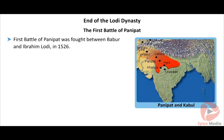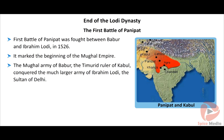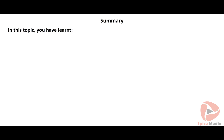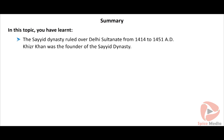Ibrahim Lodi ascended the throne in 1517 AD after his father Sikandar Lodi's death. He was a harsh ruler who disgraced his nobles and assassinated some of them. Daulat Khan Lodi was the governor of Lahore. His son Dilwar Khan was treated brutally by Ibrahim. To avenge this treatment to his son, Daulat Khan requested Babur, the ruler of Kabul, to attack India. Babur attacked India and conquered Ibrahim Lodi in the First Battle of Panipat in 1526 AD.